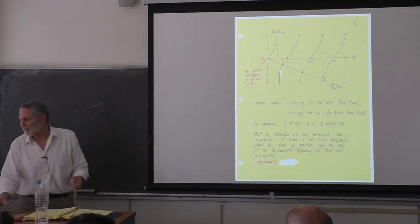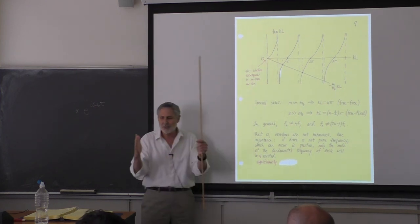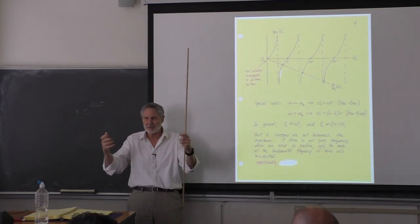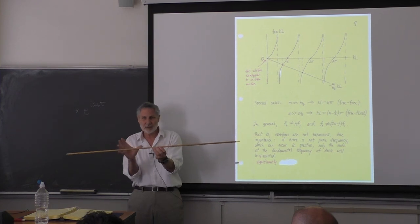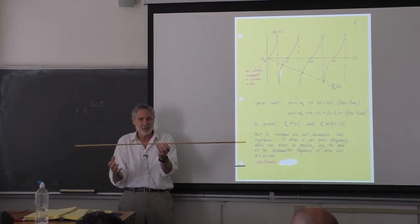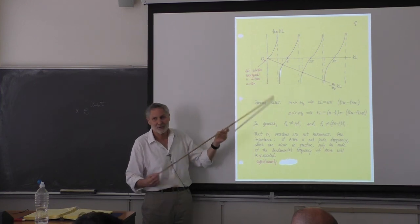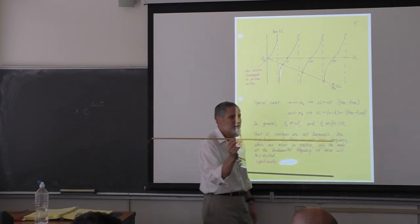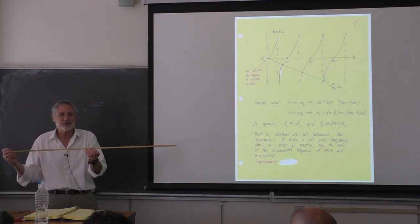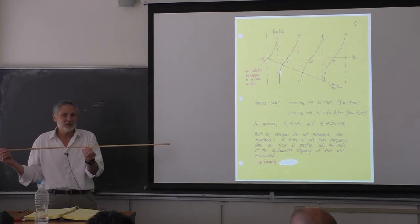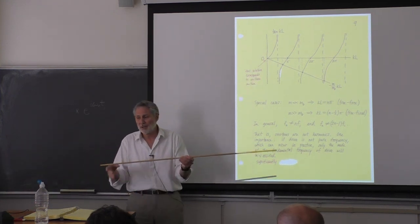What happened to the zero-frequency solution? For a string we rejected it, because a string needs tension and a frame. But here we've got just a bar — it could be out in space. The math tells us there's a solution at zero frequency: it's the uniform mode, just moving at constant velocity.